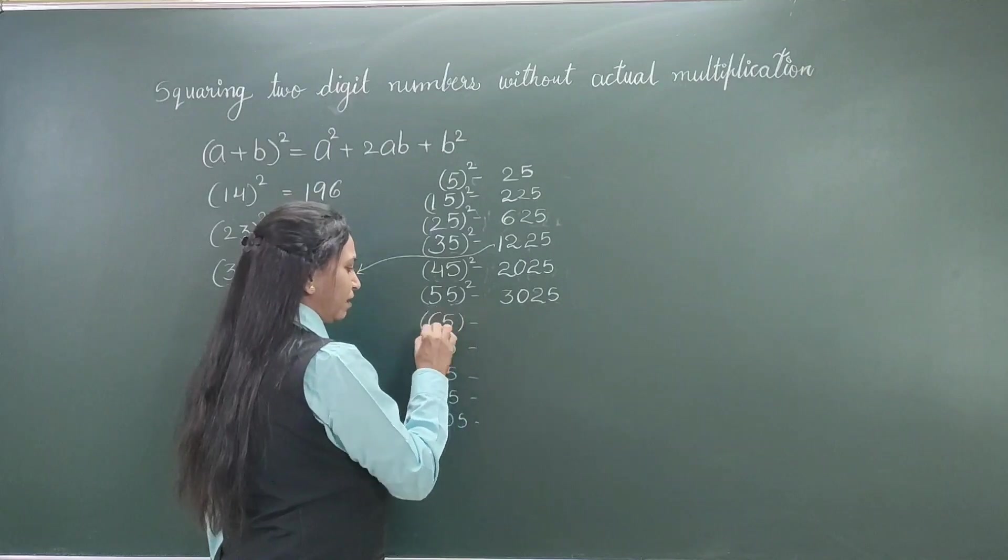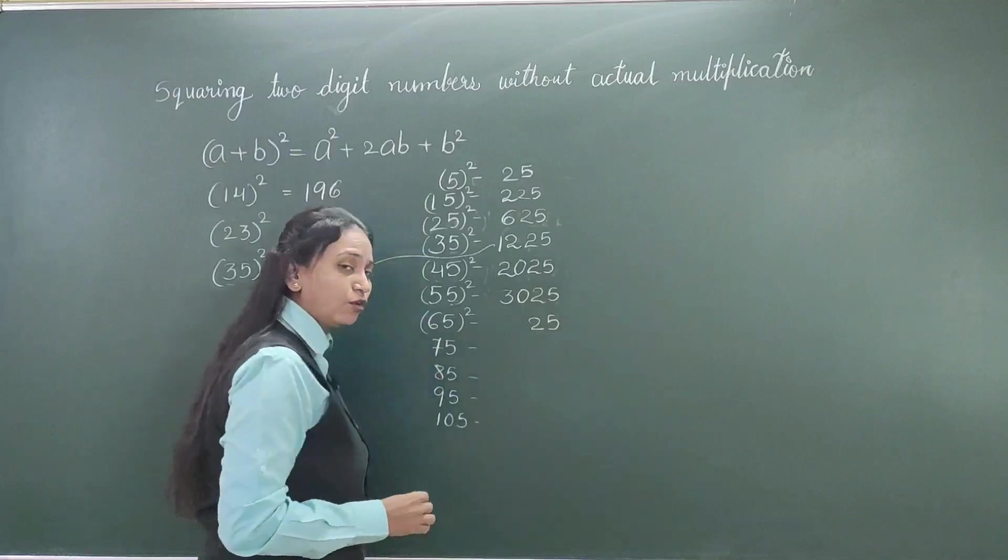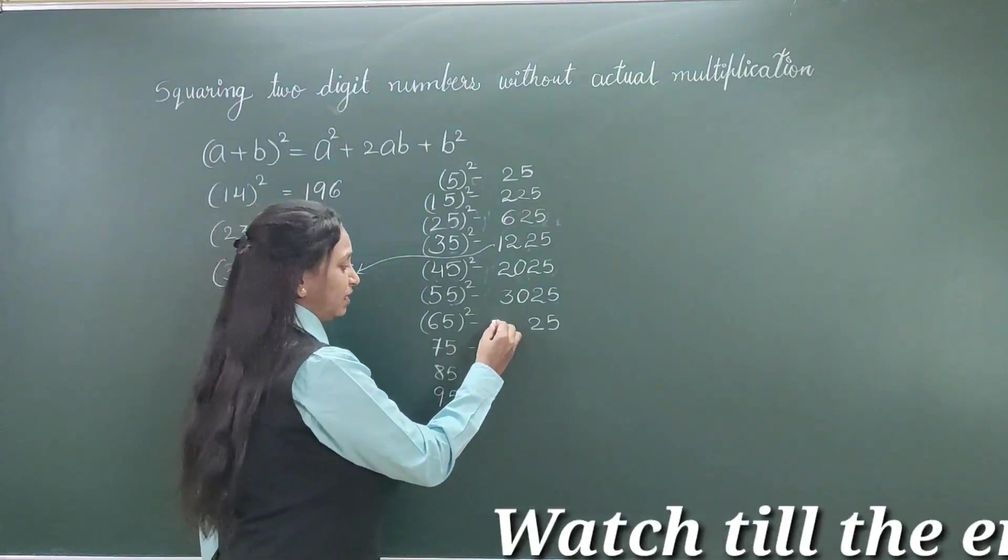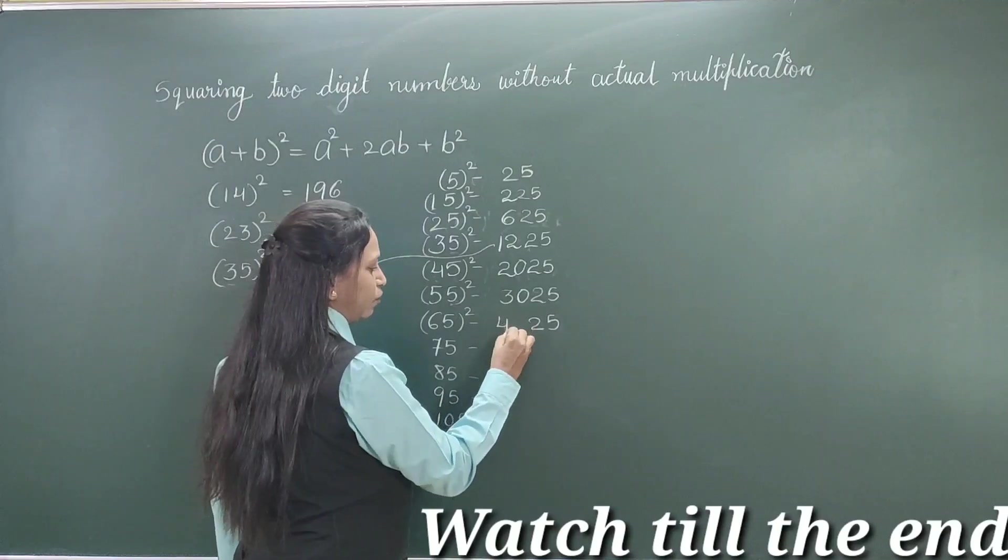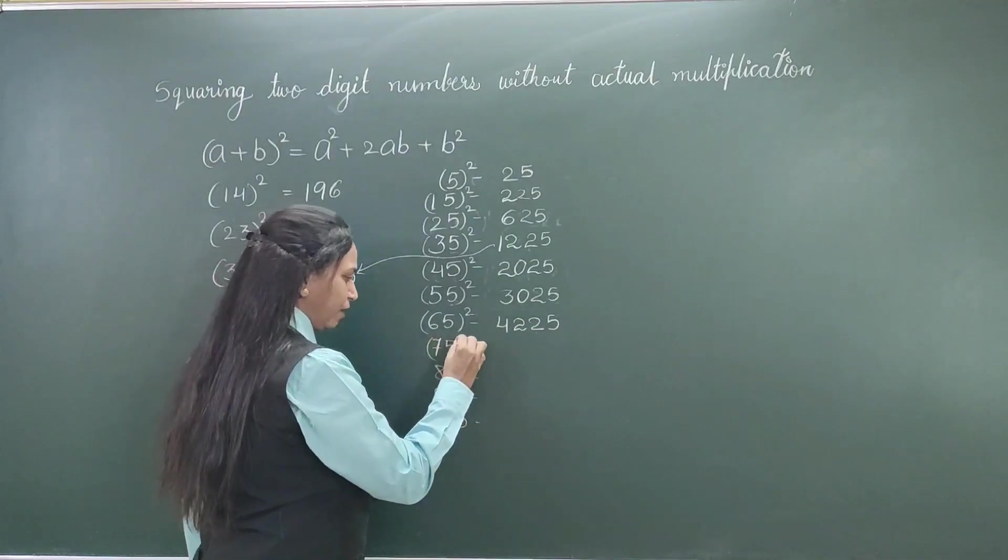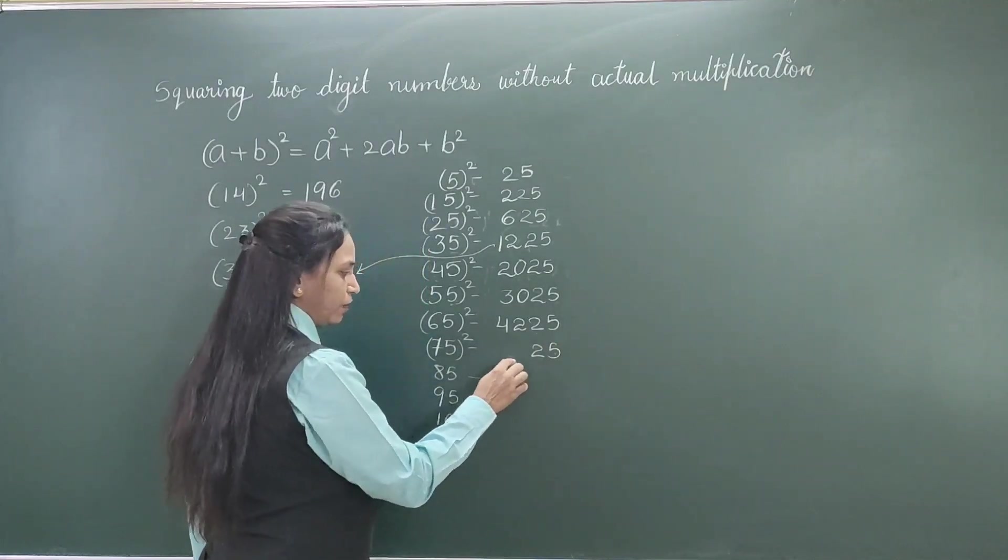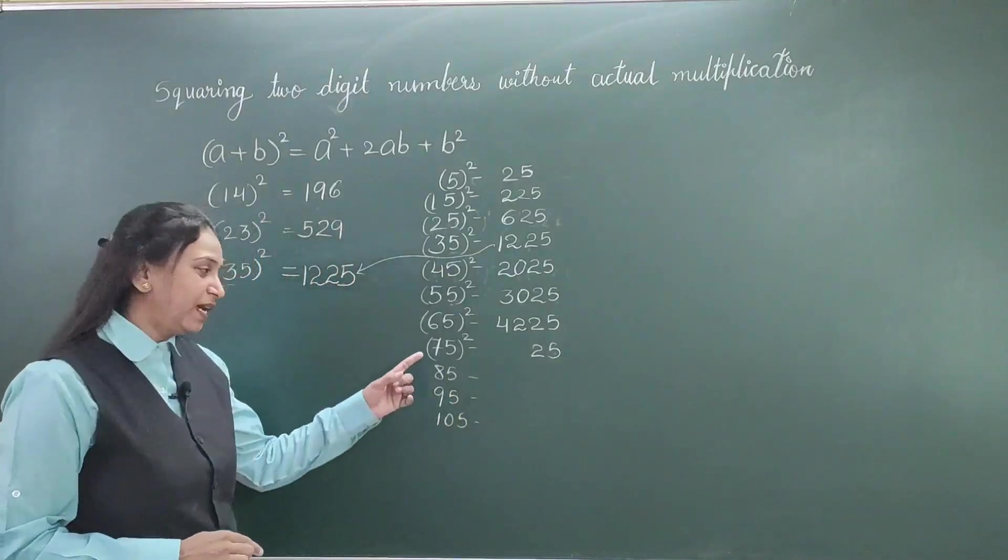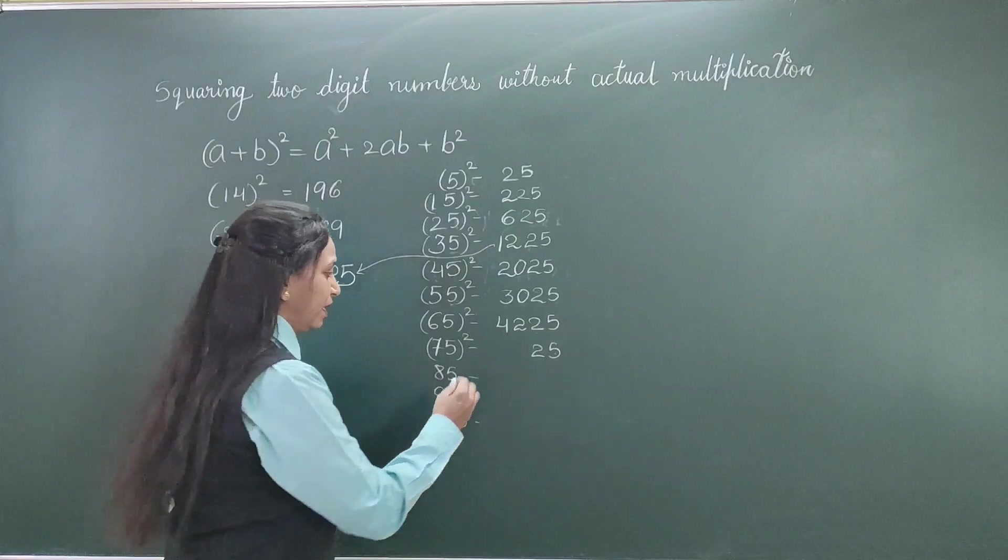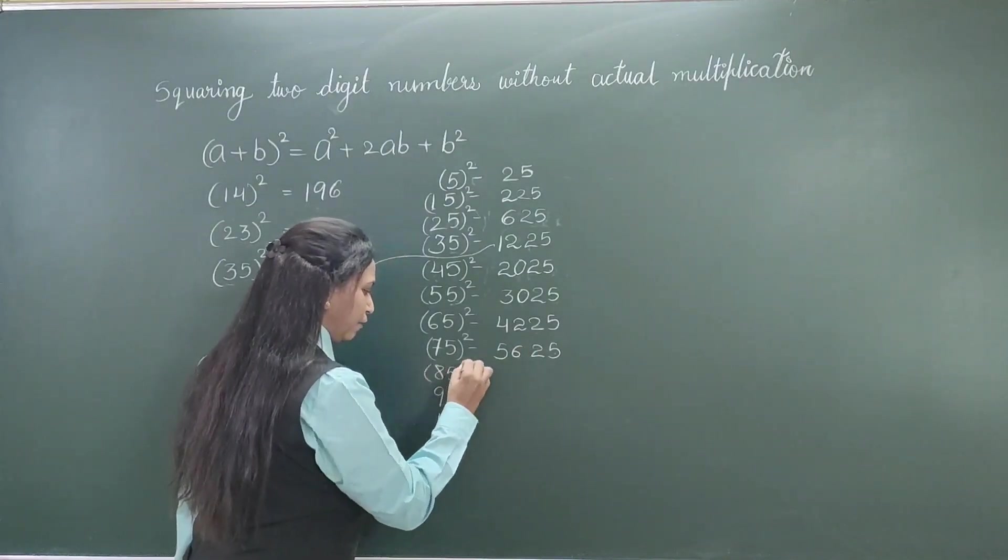Again. Now, I need not tell you. You can calculate on your own. 6 × next number. 6 × 7 = 42. Now, square of 75. Last 2 digits are 25. And for the previous one, we will multiply this digit. That is 7 × 8 = 56.